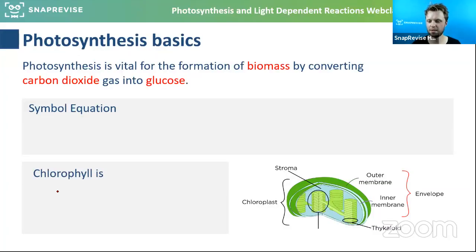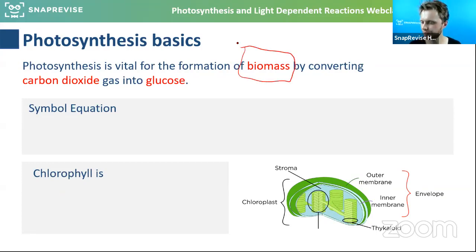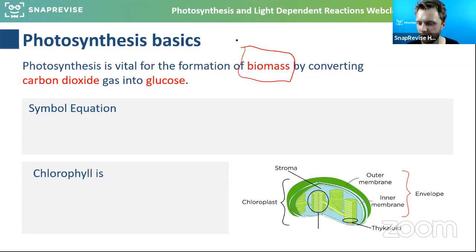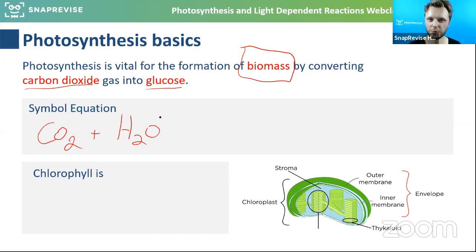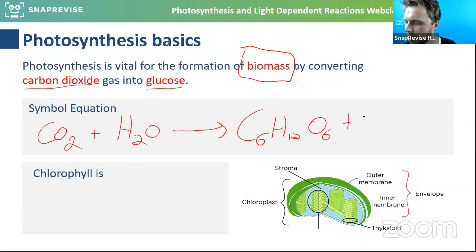Starting off with photosynthesis basics: photosynthesis is vital for the formation of biomass. Photosynthesis is there to produce biomass for a plant — whether that's cellulose or starch. Plants need biomass because they don't eat things. It converts carbon dioxide gas into glucose. The symbol equation is CO₂ plus H₂O makes C₆H₁₂O₆ plus oxygen, which we use to breathe.